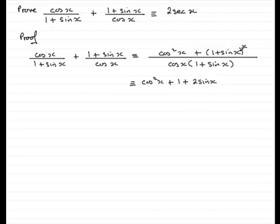And then we're going to get the last term squared so that's sin squared x. And that's all going to go over cos x multiplied by 1 plus sin x.